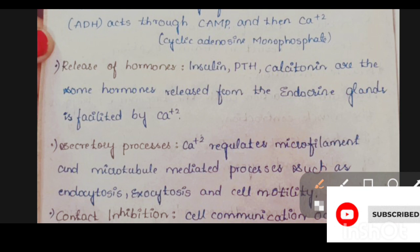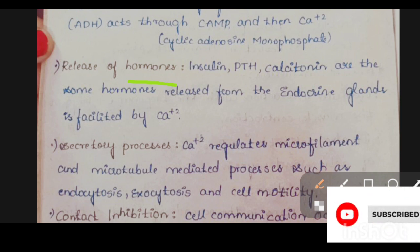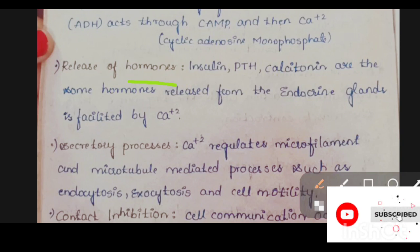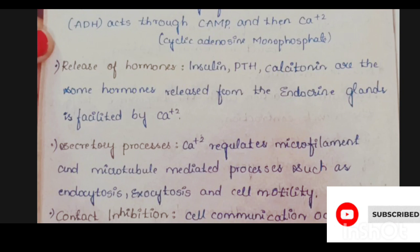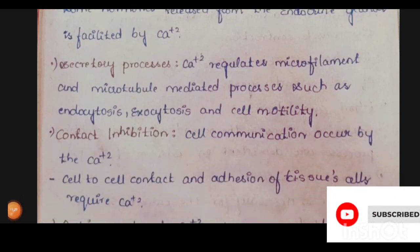Calcium also helps in the release of hormones. Not only does it activate hormones, it also facilitates their release. Insulin, parathyroid hormone, and calcitonin — released from endocrine glands — are all facilitated by calcium. For example, insulin is released from the pancreas and this is facilitated by calcium.